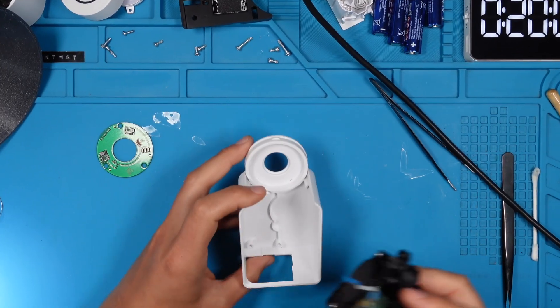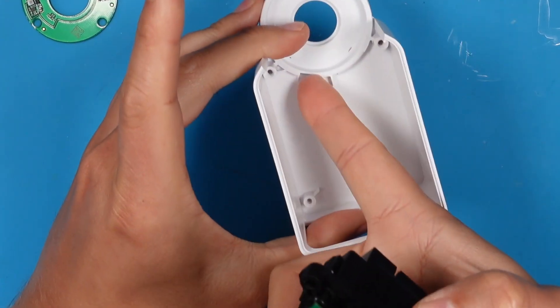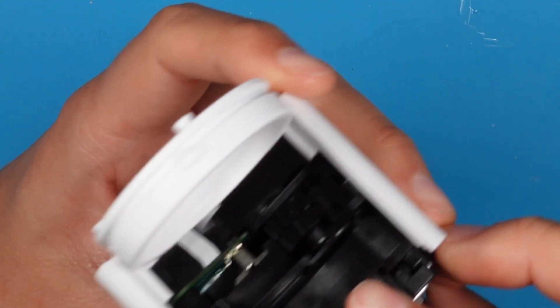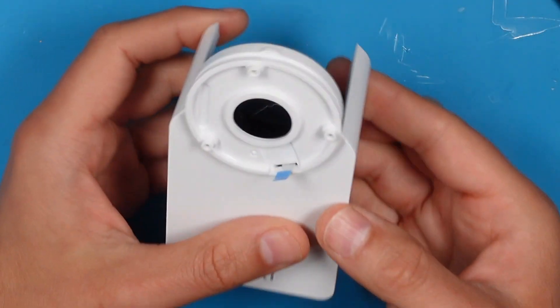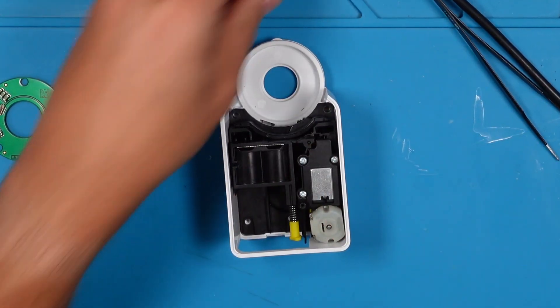For further assembly, the ribbon cable has to be maneuvered through the small slot. Let's put the screws back in to secure it.